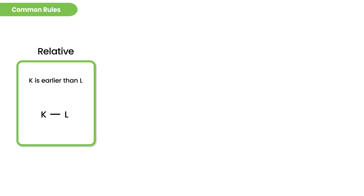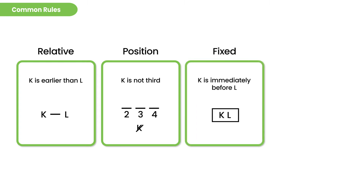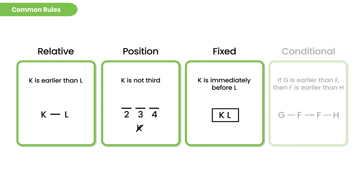There are many types of rules on a standard ordering game, but some big ones: the most common would be rules that are relative in nature, building a relative relationship between two players. A position rule that rules out a player from a particular position. A fixed rule that connects two players in a fixed block-type relationship — either blocks or split blocks where you have a player or two players in between. And then conditional rules: if G is earlier than F, then F is earlier than H. In the game we just looked at, we have a relative rule, a fixed rule, and a conditional rule, but no position rule.